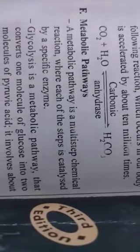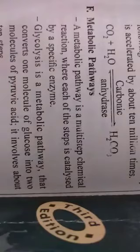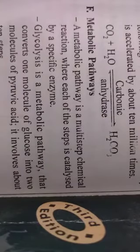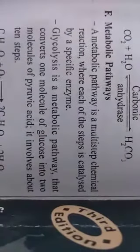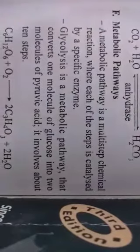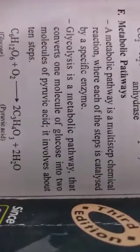Metabolic pathway is a multi-step chemical reaction where each step is catalyzed by a specific enzyme. In our body, for example in respiration, the Krebs cycle requires different catalysts at each step. Glycolysis is a metabolic pathway that converts one molecule of glucose into two molecules of pyruvic acid. We wrote it in one step, but actually there are 10 steps from glucose to pyruvic acid.